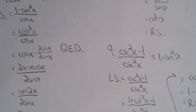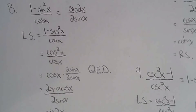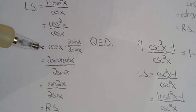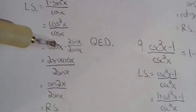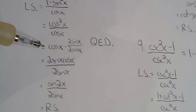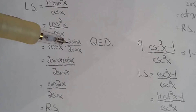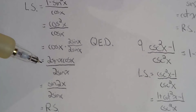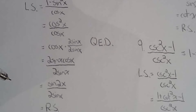For number eight, I worked on the left-hand side and simplified down to just cosine x. Then I looked at the right-hand side and multiplied numerator and denominator by 2 sine x, because the numerator on the right side is sine 2x, so that gives me 2 sine x cosine x in the numerator.